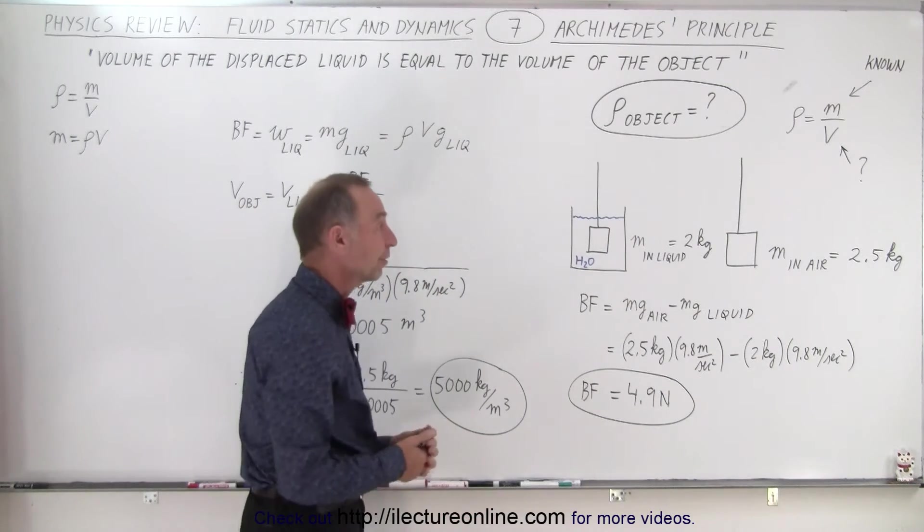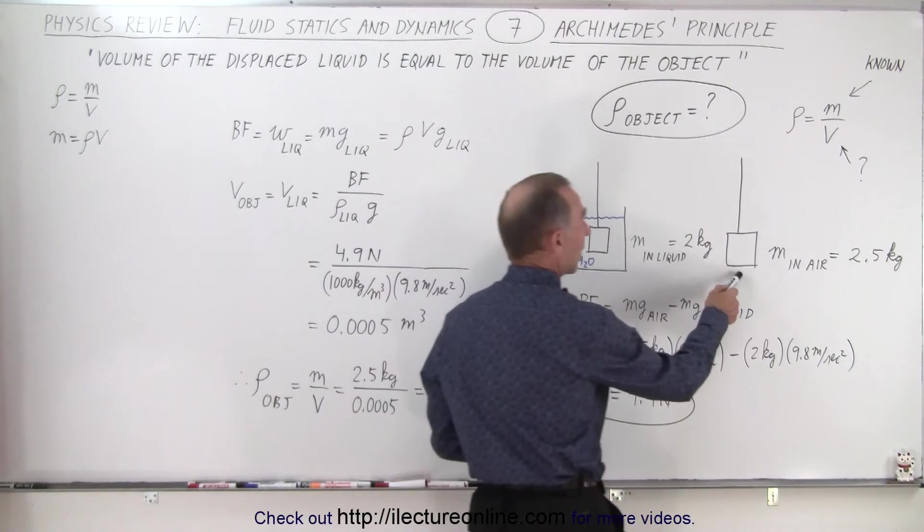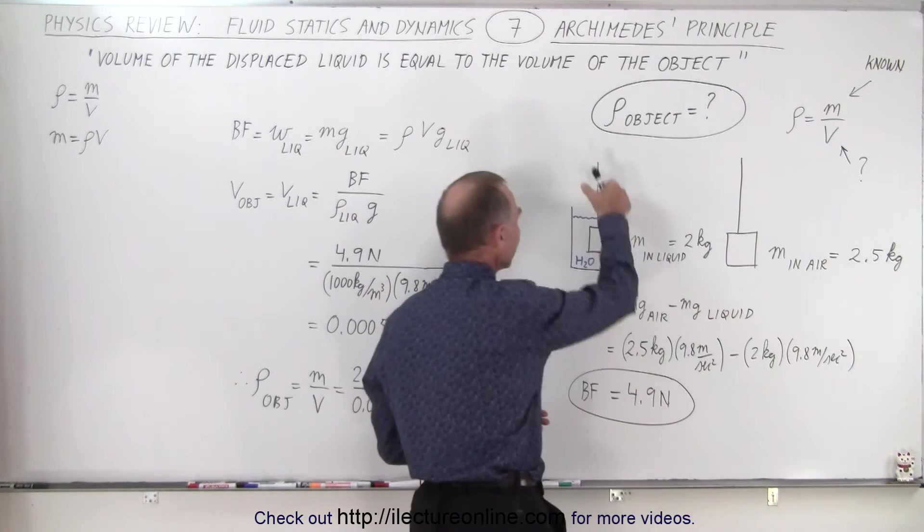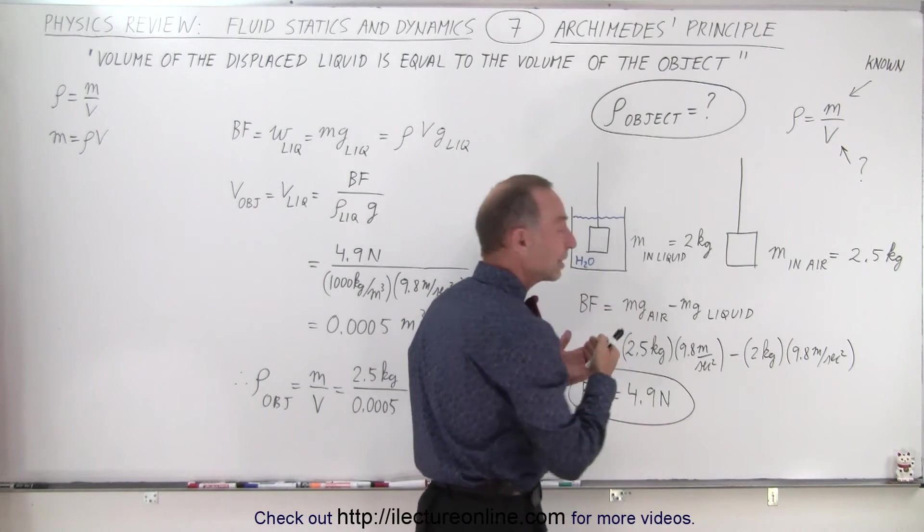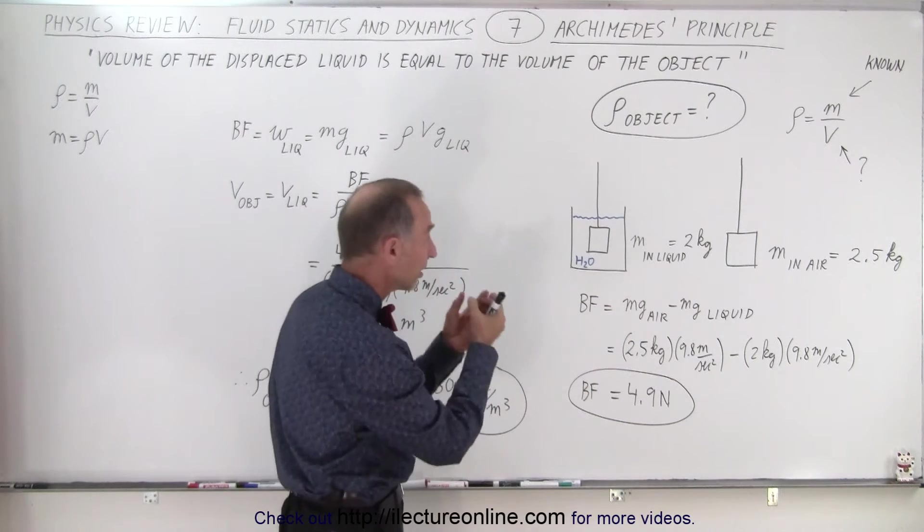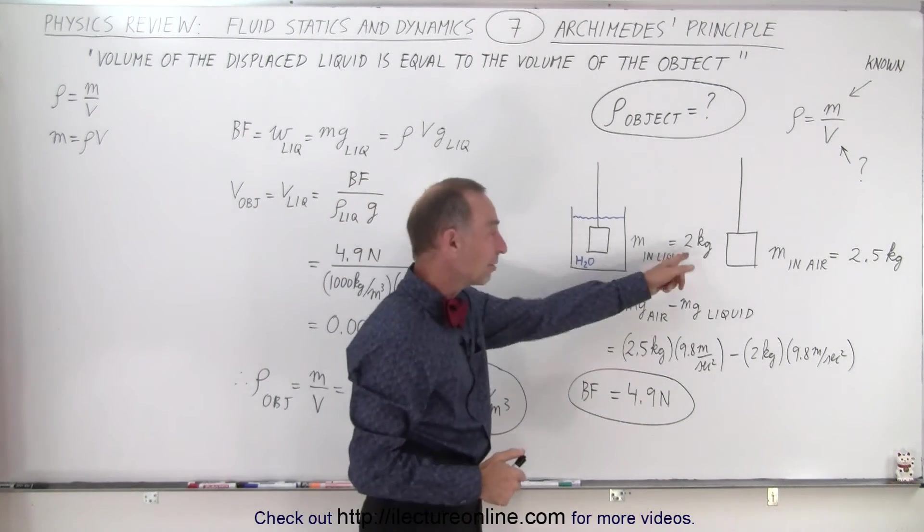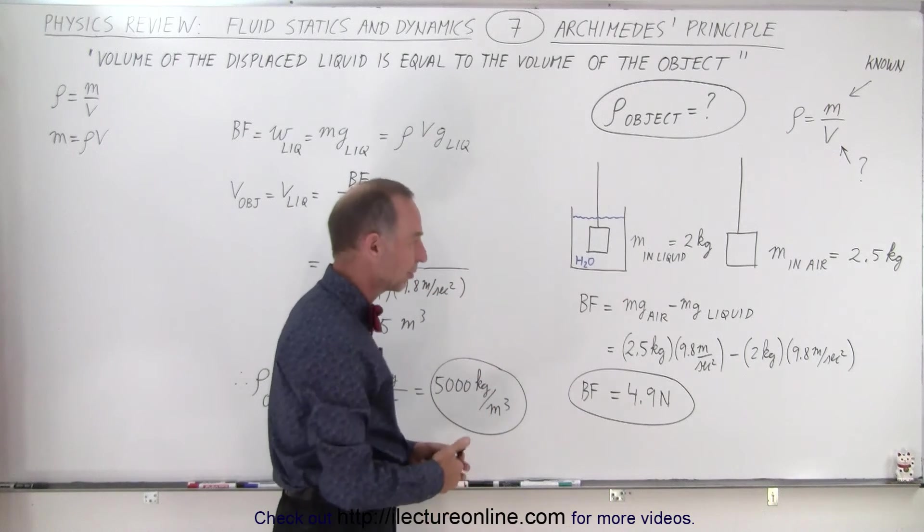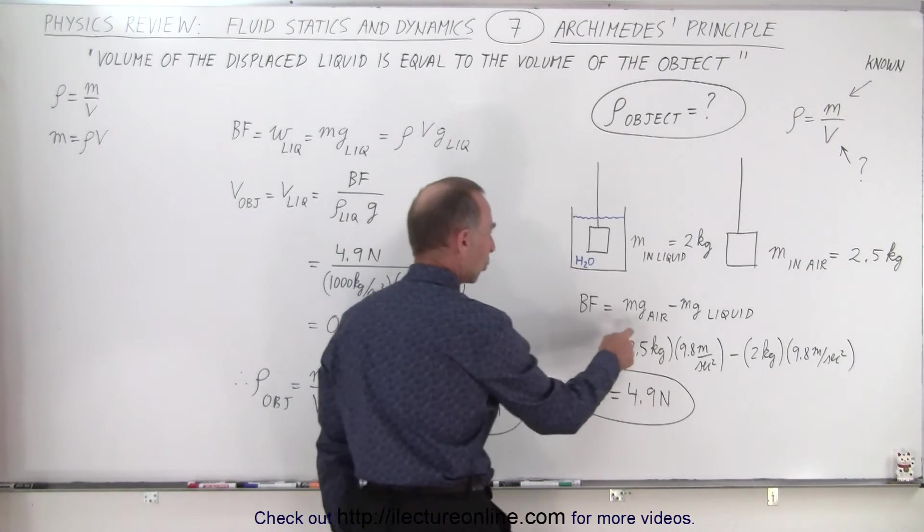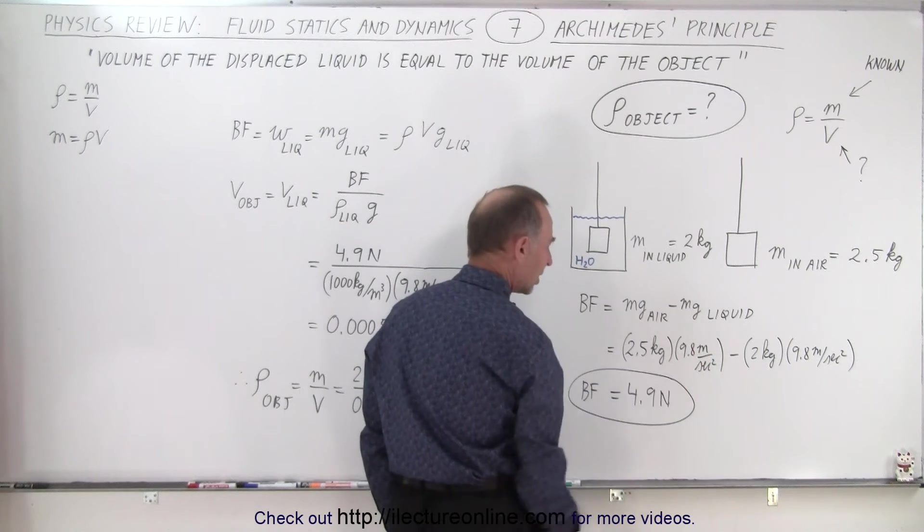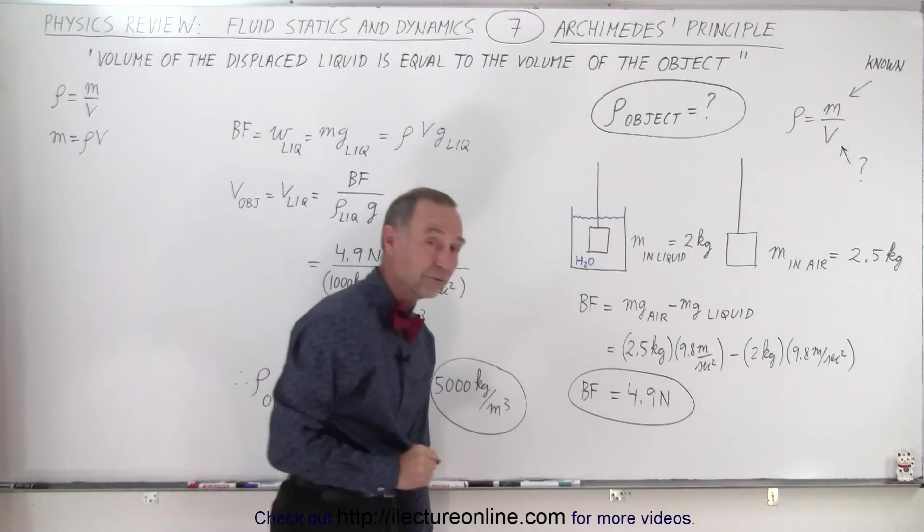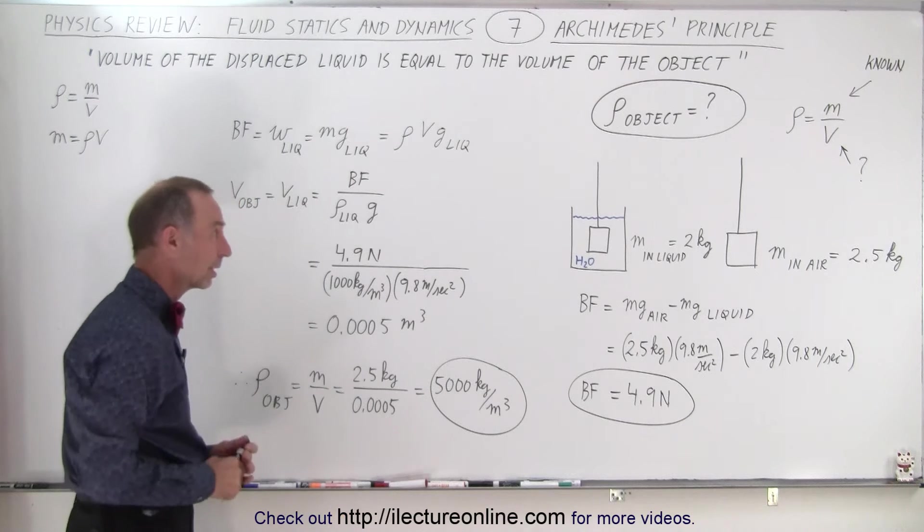So, how do we do that? Well, first of all, we measure the mass of the object in air, then we dunk it into a liquid like water and measure the apparent mass when it's in the liquid. And of course, it's going to be less because there's some sort of buoyancy force. The buoyancy force is equal to the weight in the air minus the weight in the liquid, so I have to multiply the mass times g, and there we get the difference, 4.9 Newtons in this particular case.